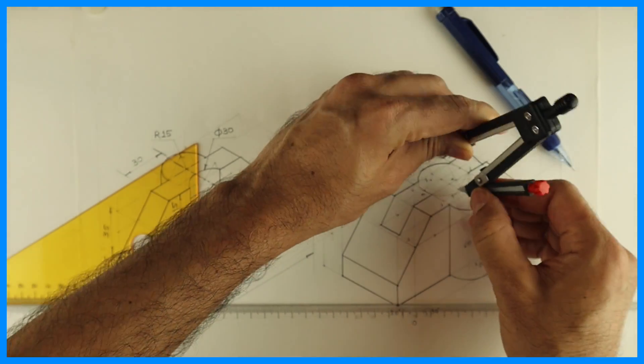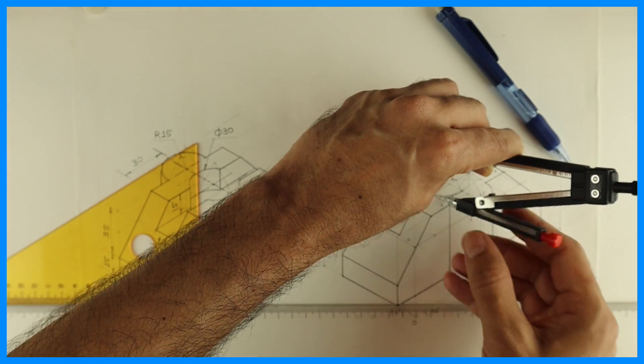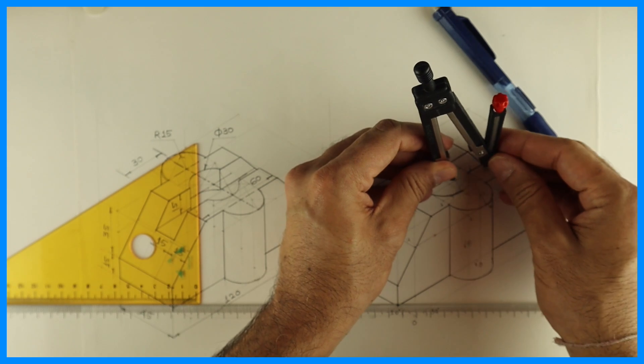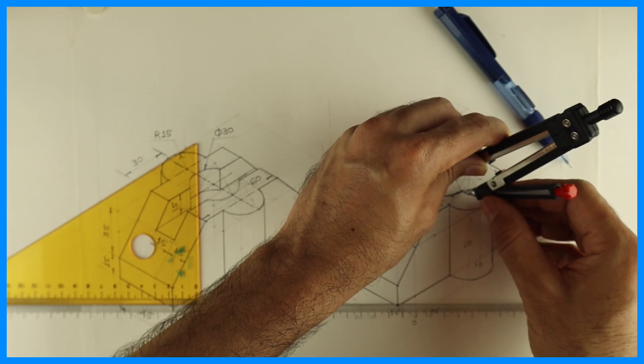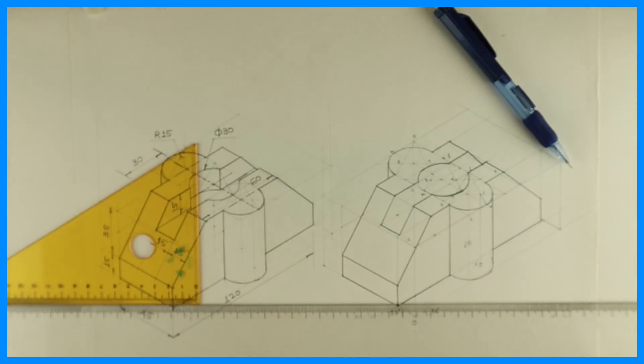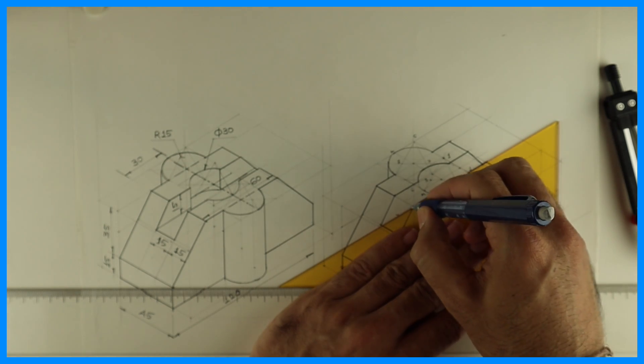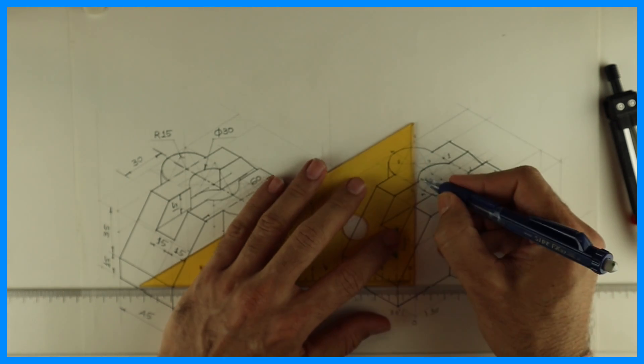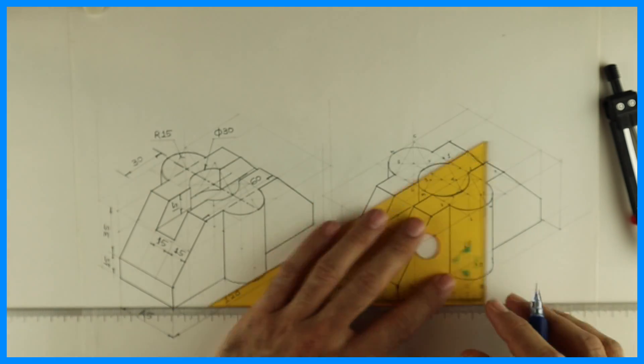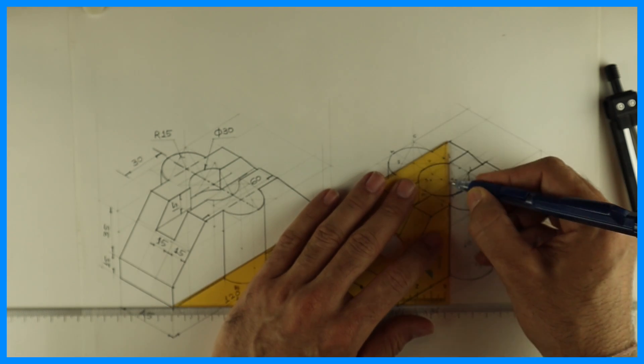Same way, from here when you are drawing it, only this much will be dark. And from here, this much will be dark. Then you take this behind down by 15. You can draw this line, you can take this line behind by 15 to show depth. This is also 15.